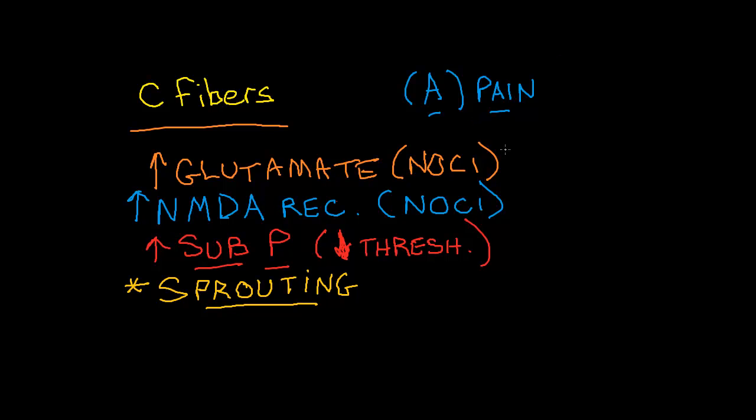Windup is ultimately the cumulative effect of all four of these items we just talked about: the glutamate, the receptors, the substance P, and the sprouting. Windup basically says you have a central nervous system that is built for processing nociception.